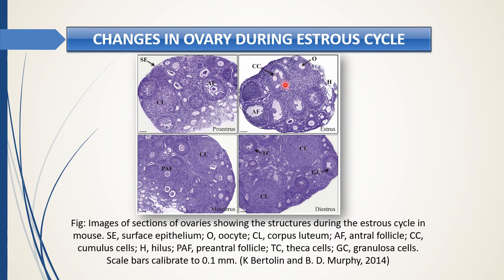During the estrus phase, follicles reach the Graafian stage. When they attain Graafian follicle status, ovulation occurs. After ovulation, during metestrus, the corpus luteum forms. Then in the last phase, diestrus, the corpus luteum slowly disappears. All these changes inside the ovaries are due to the hormonal interplay.